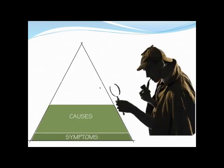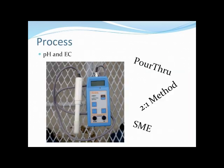Now we need a systematic process for troubleshooting which of these causes is making our symptoms present themselves. When I see a nutrient deficiency and I've decided which one it is, the first thing I ask — and just about every time a grower calls or emails me with a problem — is: what's the pH and what's the EC? If you don't know that as a grower, that's the first thing your extension specialist is going to ask, and they'll ask you to go back in and do a substrate test.